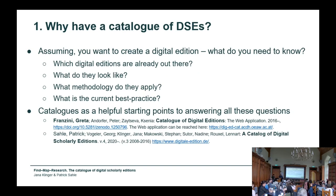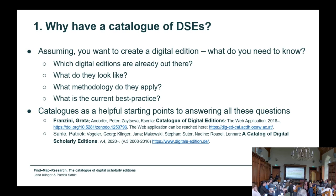Why should we have a catalogue on digital scholarly editions? It's quite straightforward. Assuming you want to create a digital edition, you would need to know which digital editions are already out there — it's about giving an overview. You would need to know what other editions look like, which gives you some inspiration for your own project. You would also need to know what methodology other editions apply, so the catalogue helps bring together sound theory and practice in digital scholarly editing.